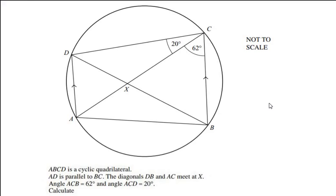Welcome or welcome back to my channel. In this video we are going to solve an example on circle theorems. ABCD is a cyclic quadrilateral — all the vertices are on the circle. Line AD is parallel to line BC. The diagonals DB and AC meet at point X, and angle ACB is 62 degrees and angle ACD is 20 degrees.